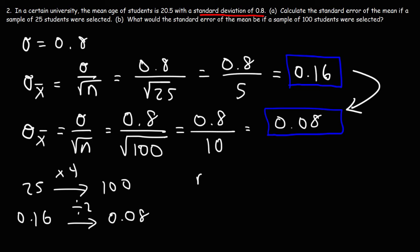So anytime you increase, if you quadruple the value of n, the standard error will decrease by half. It's an inverse relationship, and the reason being there's a square root of n on the bottom. The square root of 4 is 2.